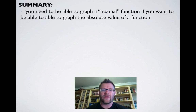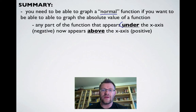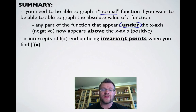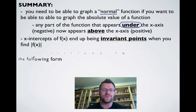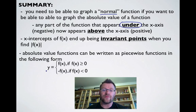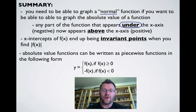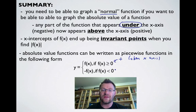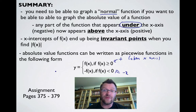In summary: you need to graph a normal function — lines and quadratics — to graph its absolute value. Any part below the x-axis (negative) now appears above the x-axis (positive). X-intercepts of f(x) become invariant points when you find the absolute value of f(x). Absolute value functions can be written as piecewise functions: y = f(x) if f(x) ≥ 0, and y = -f(x) where f(x) was negative. Your assignment is on pages 375 to 379 — good luck and we'll see you in class.